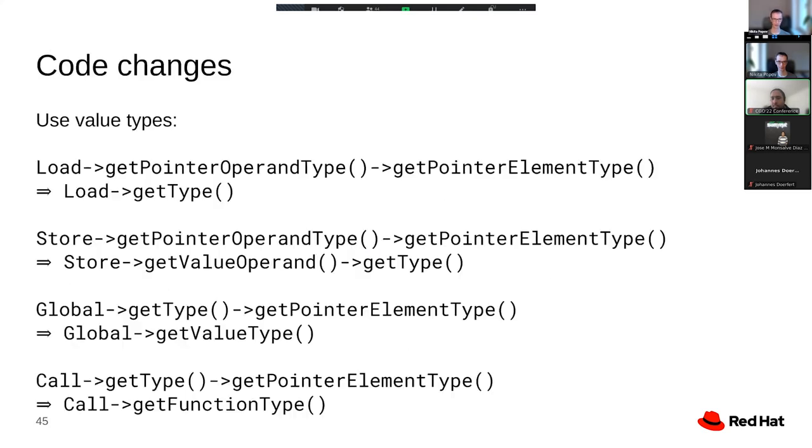Of course, when we get to actual code, the primary change is that all the uses of the getPointerElementType method have to be removed. And the way we do it is by instead inspecting some kind of semantically relevant type, depending on the context. This could be for loads, the load return type instead of the load pointer element type. For stores, it would be the stored value type. For globals, it would be the global value type. For calls, it would be the call function type, and so on.